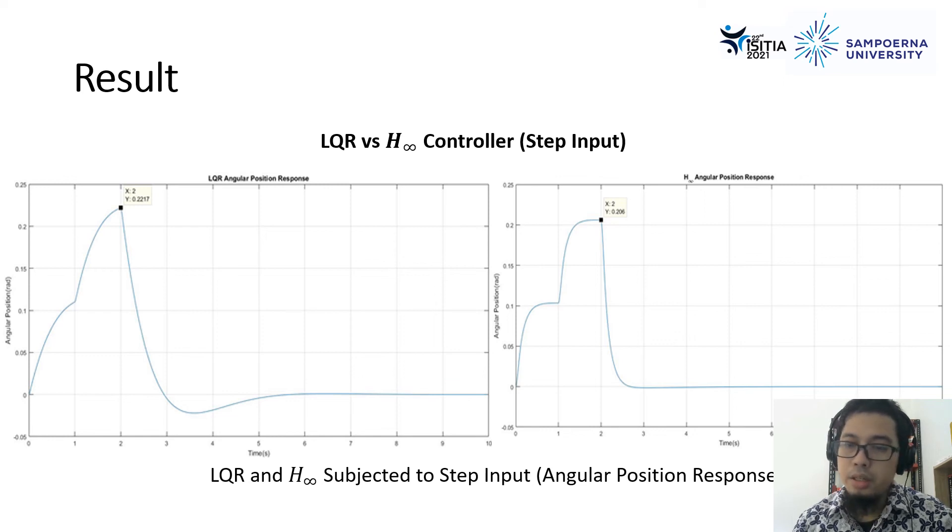we have that H-infinity managed to keep a maximum angular position at 0.6 radian and angular position at 3 seconds. And here, we get that the H-infinity has around 63.64% less maximum rather than LQR and 50% faster tilt angle settling time rather than LQR.